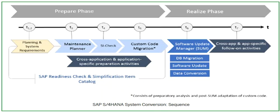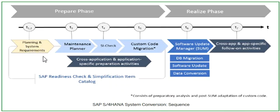The next phase is the SAP S4HANA conversion procedure. It has two steps: one is the prepare phase and the second is the realize phase. In the prepare phase, we do the planning and system requirements check to verify the system is ready for the S4HANA conversion.